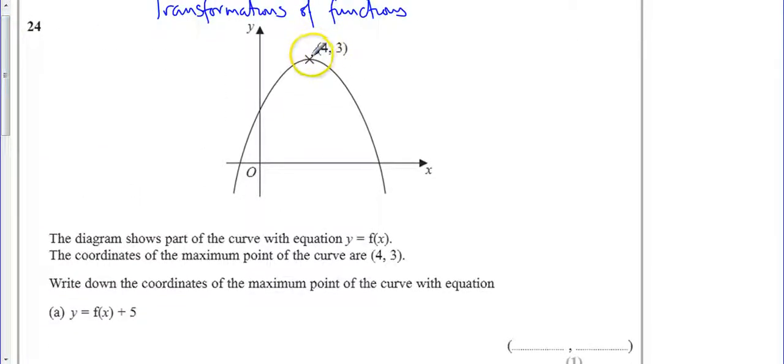So this point is actually going to go five spaces up. The whole graph is going to be shifted up. So that means the x coordinate stays the same. Just instead of three, we do three plus five, which takes it to eight.